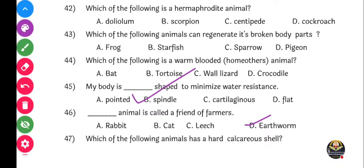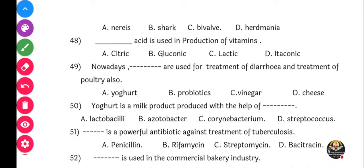Next question: Which of the following animals has a hard calcareous shell? Options: Nereis, shark, bivalve, or hard mania. Kona cha body wati ek strong kiwa hard calcareous shell present asana rahe? Correct answer is bivalve.